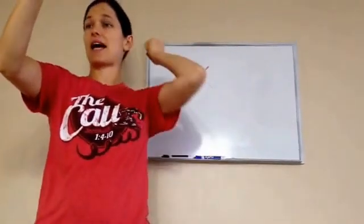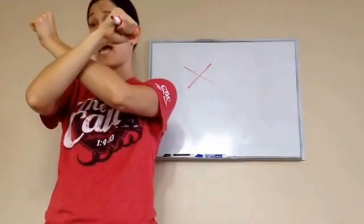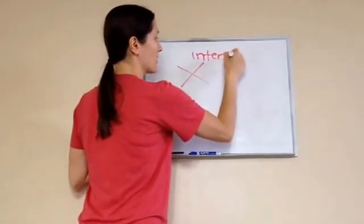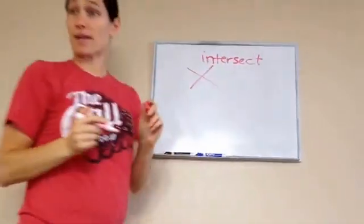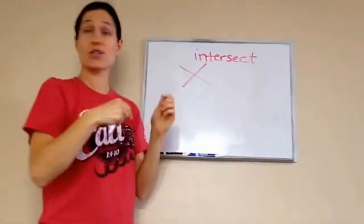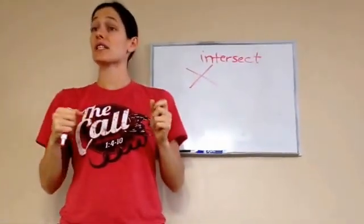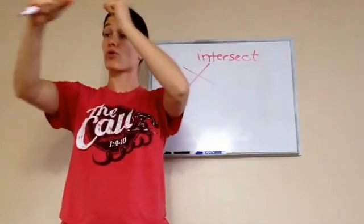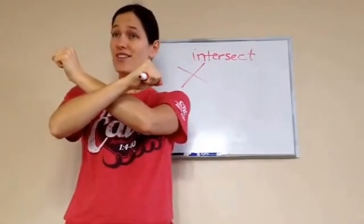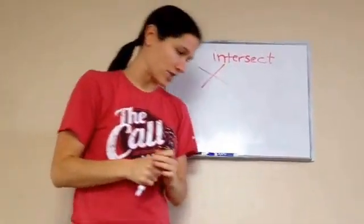When this line and this line cross, it means they intersect. And guess what? When we go out and drive a car, highways are called intersections. That's where two roads cross each other. That's what the word intersect means.